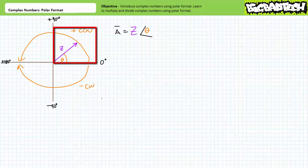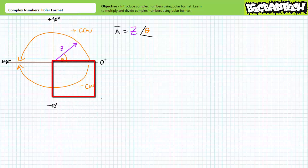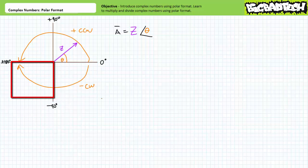Complex numbers expressed using polar format with angles between 0 and positive 90 degrees places us in the first quadrant. Those with angles between positive 90 degrees and positive 180 degrees places us in the second quadrant. Those with angles between 0 and negative 90 degrees place us in the third quadrant. We'll examine means of converting between rectangular and polar format in later lectures. Today's lecture will limit ourselves to multiplying and dividing complex numbers, a task especially well suited for polar format.